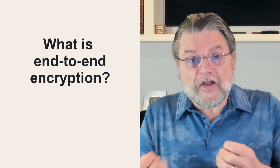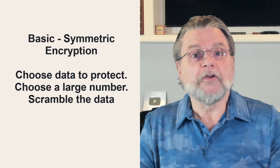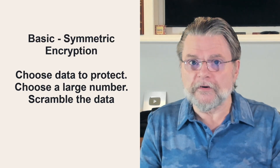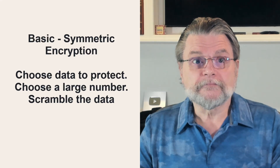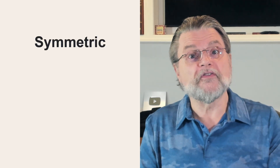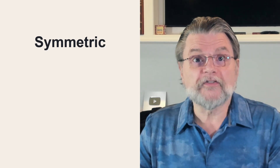Let's look at exactly what end-to-end encryption means — and the big spoiler is that there's more than one definition. First, we need to talk about what encryption is. There are basically two types. Basic or symmetric encryption is straightforward: you take some data you want to protect, choose a really large number, and scramble that data using some very fancy math. The result is scrambled data that can't be unscrambled without knowing that large number — what you and I might call a password, passphrase, or key. Symmetric refers to using the same large number to decrypt as you did to encrypt.